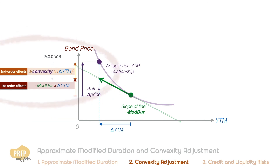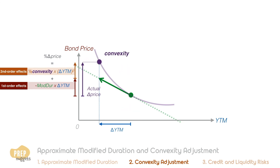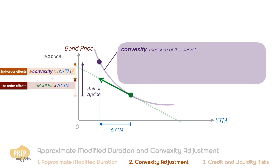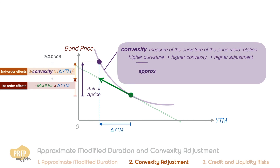So what is convexity and how do we calculate it? Convexity is a measure of the curvature of the price-yield relation. The more curved it is, the higher the convexity measure, and the greater the convexity adjustment to the duration-based estimate of the change in price. A bond's convexity can be estimated with this formula.